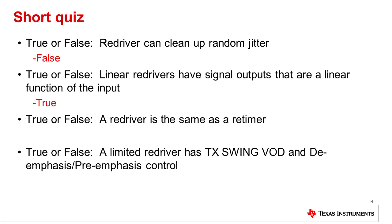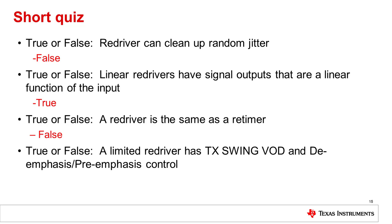True. The output signal amplitude of a linear re-driver is a near-linear function of the signal's amplitude at its input for a certain range of input and output amplitudes. True or false: A re-driver is the same as a re-timer. The answer is false. A re-driver is an analog component that provides compensation of an attenuated signal using an equalizer function on its receiver side, while a re-timer is a mixed signal device that includes equalization functions plus a clock data recovery function to compensate both deterministic and random jitter to transmit a clean signal downstream.